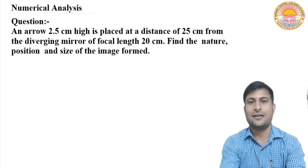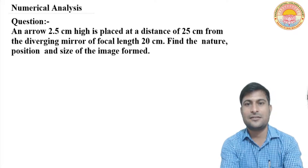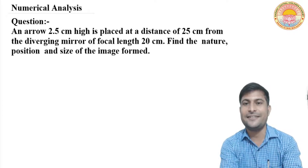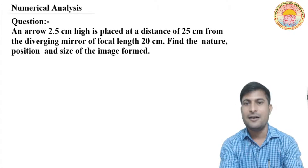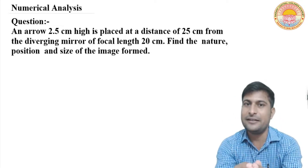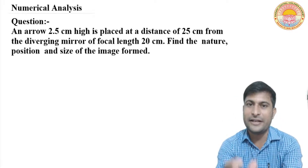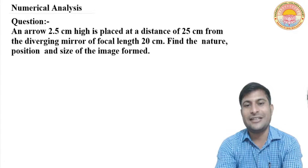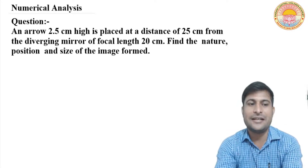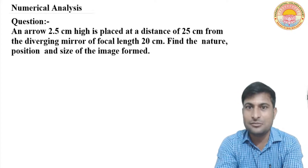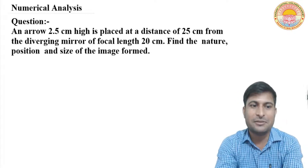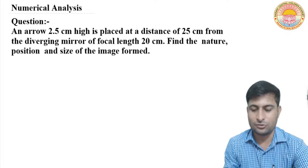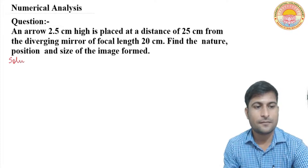Now let's start the next question. An arrow 2.5 cm high is placed at a distance of 25 cm from a diverging mirror — as I mentioned earlier, a convex mirror is also known as a diverging mirror. The focal length is 20 cm, so again the focal length will be positive. Find the nature, position, and size of the image — here, size is also being asked.